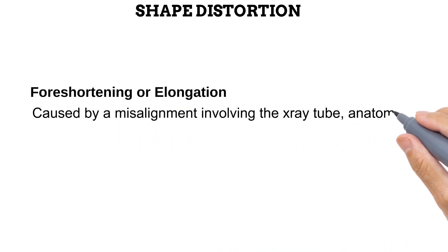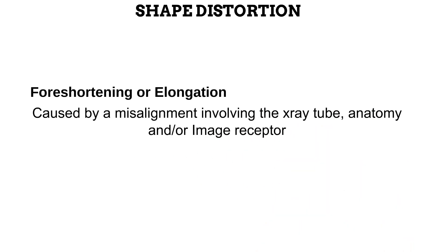In a normal situation, the anatomy is parallel to the image receptor, and the X-ray tube is perpendicular to both of them. This alignment prevents shape distortion of any kind and allows the image to completely represent the anatomy in terms of shape. Any change in this alignment between the tube, anatomy, and image receptor would cause shape distortion. This change in alignment can occur when the tube is tilted such that it is no longer perpendicular to the anatomy and image receptor. It can also occur when the anatomy is not lying parallel to the image receptor.